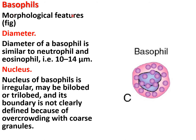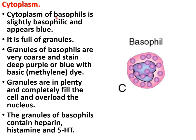The next cell is basophil. The diameter of the basophil is about 10 to 14 micrometers. The nucleus is irregular and may be bilobed or trilobed; its boundary is not clearly defined because of overcrowding with the coarse granules. The cytoplasm is slightly basophilic and appears blue, full of very coarse granules stained deep purple or blue with basic methylene blue dye. The granules are plentiful and completely fill the cell, overloading the nucleus.